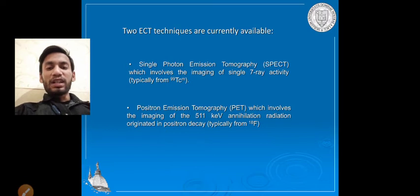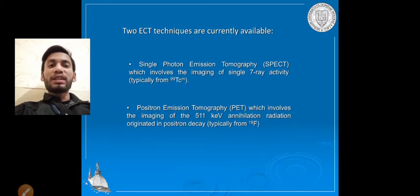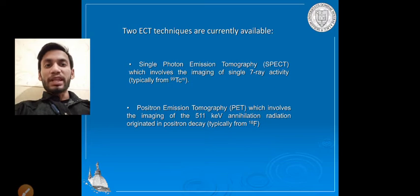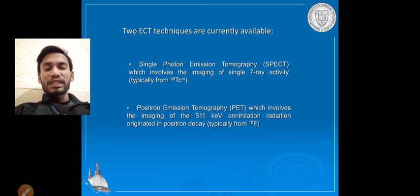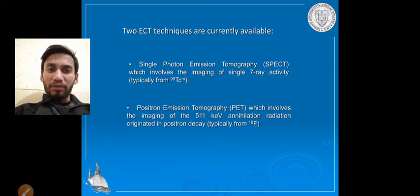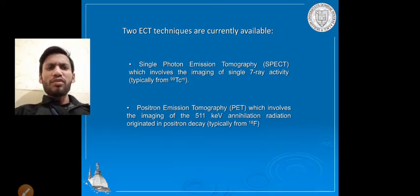Two ECT techniques are currently available: single photon emission computed tomography (SPECT) and positron emission tomography (PET). Both are part of emission computed tomography. SPECT is involved in imaging of single gamma-ray activity.